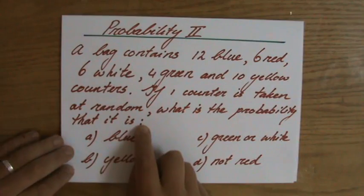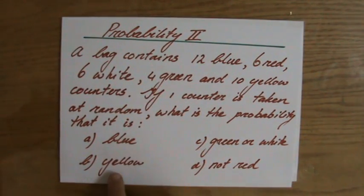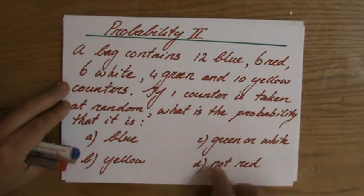What is the probability that it is blue, yellow, green or white, and not red?